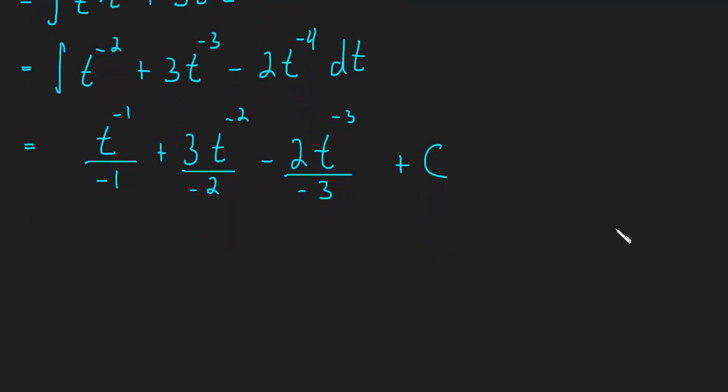And now we can simplify. So t to the negative 1. So we have negative t to the negative 1. So that's just negative 1 over t. So this whole thing is negative. Maybe I'll write the negative out front. So it's just negative 1 over t. We have a negative 2 in the denominator. So that's also going to be negative. And this will just be 3 over 2t.